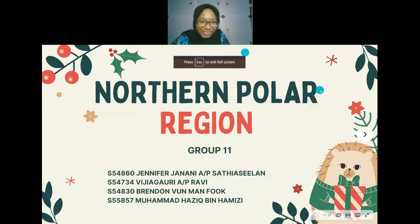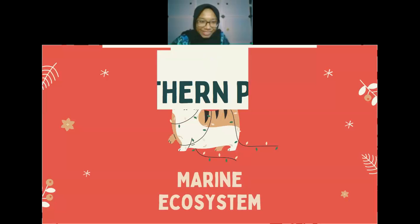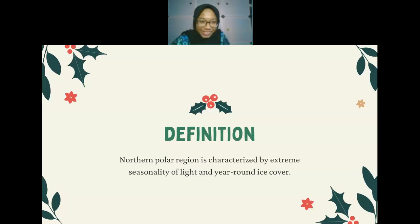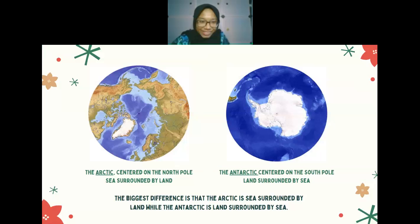Group 11 presents on the Northern Polar region. The Northern Polar region is characterized by extreme seasonal light and year-round ice cover. Regarding location, the Arctic is a sea surrounded by land, while the Antarctic is land surrounded by sea.